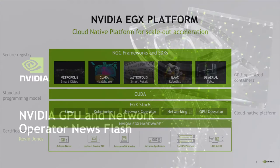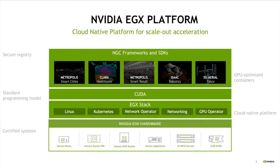Before we get to the GPU and network operator, I want to talk about the platform I specifically work on, which is EGX. EGX is a cloud-native platform for scale-out acceleration. You can see in the visualization here that this goes from the certified systems of hardware at the bottom layer, through to the EGX stack itself, which is a common application platform built on Linux and Kubernetes. The network operator and GPU operator sit at this layer, and those are the ones we're going to specifically walk through today.